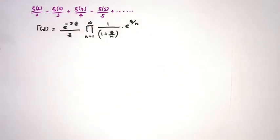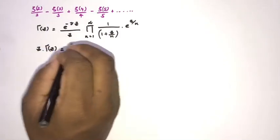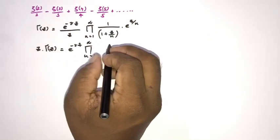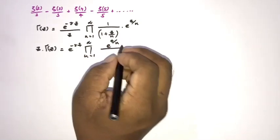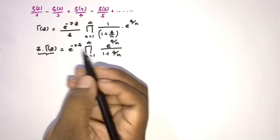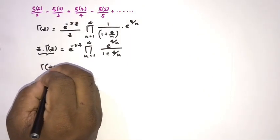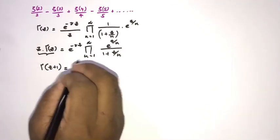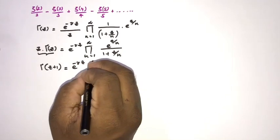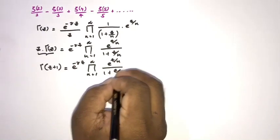I am going to multiply both sides by C. So here we have C·Γ(C) is equal to e^(−γC) times the infinite product from n=1 to infinity of e^(C/N) over (1 + C/N). We know C·Γ(C) = Γ(C+1), so we can write Γ(C+1) = e^(−γC) times the infinite product from n=1 to infinity of e^(C/N) over (1 + C/N).